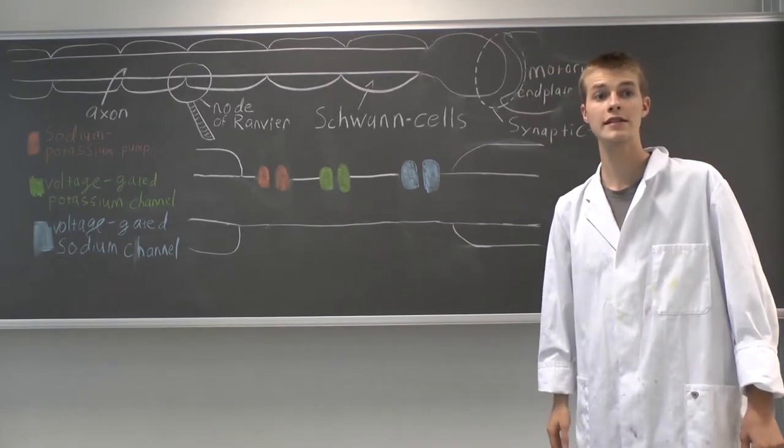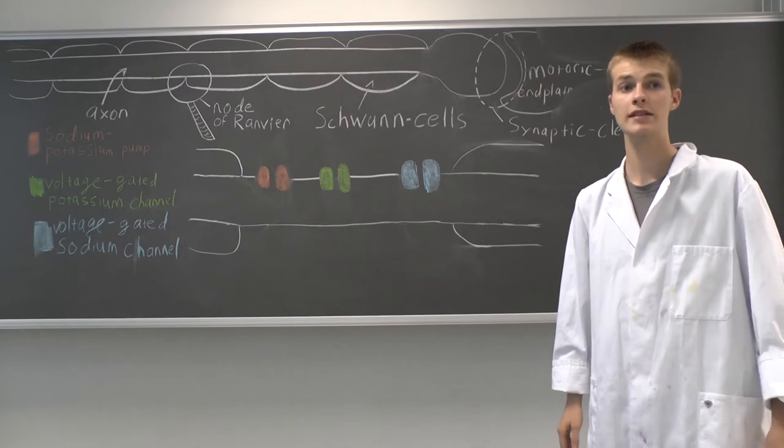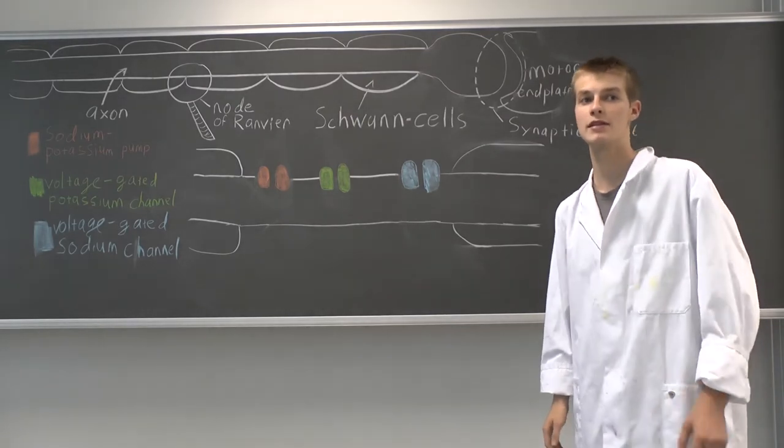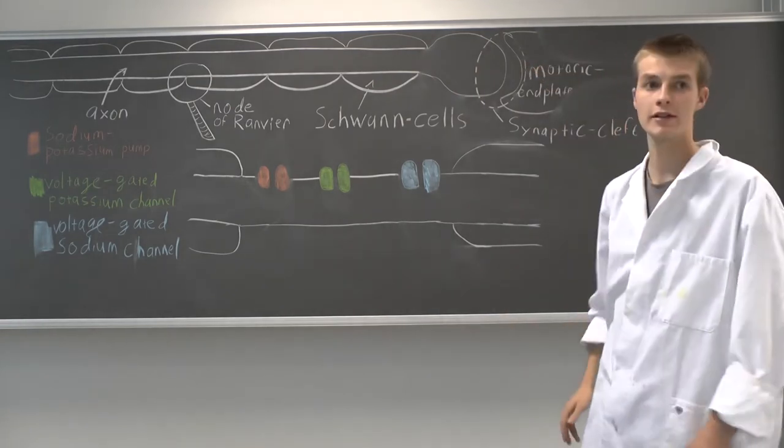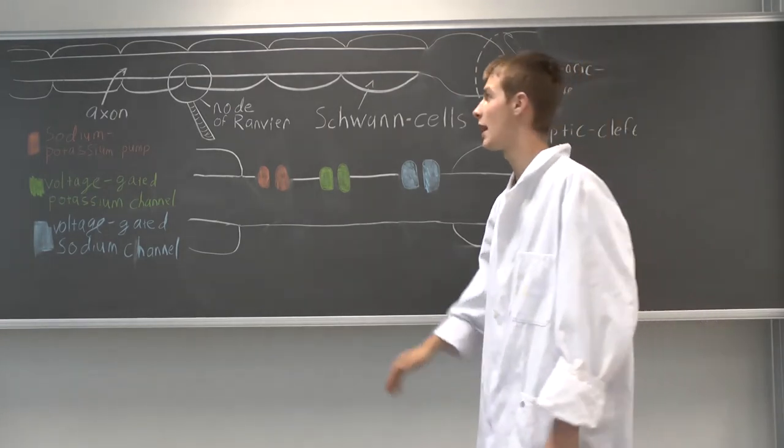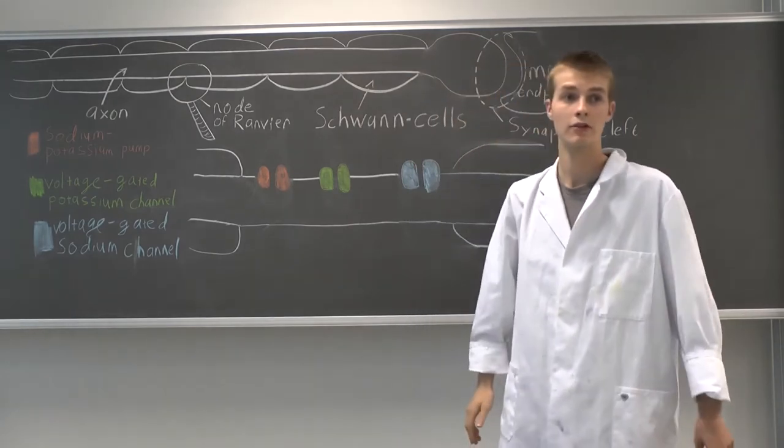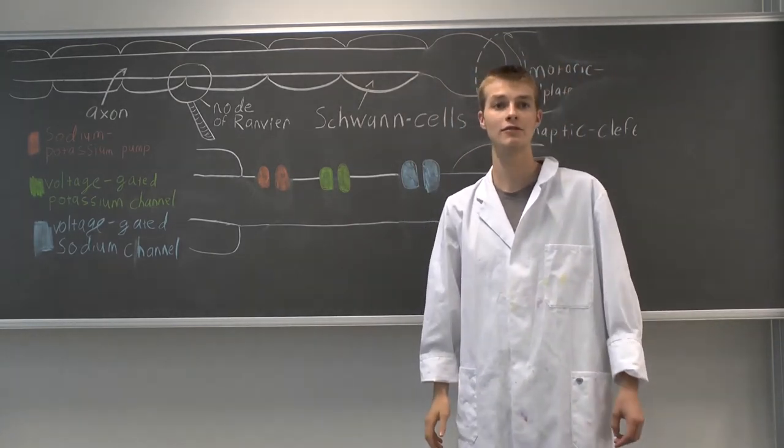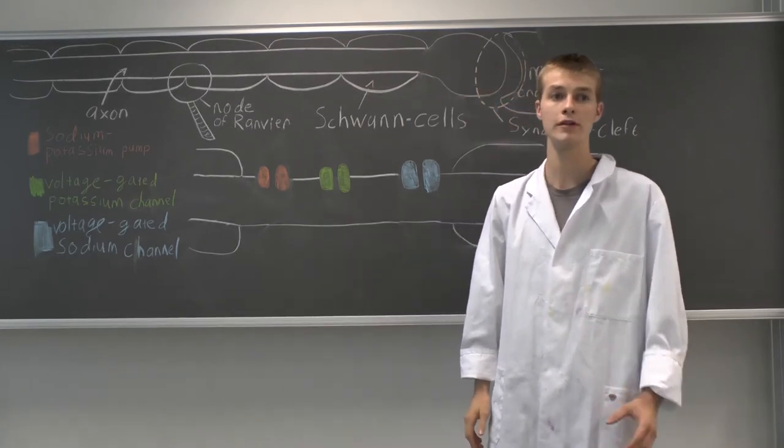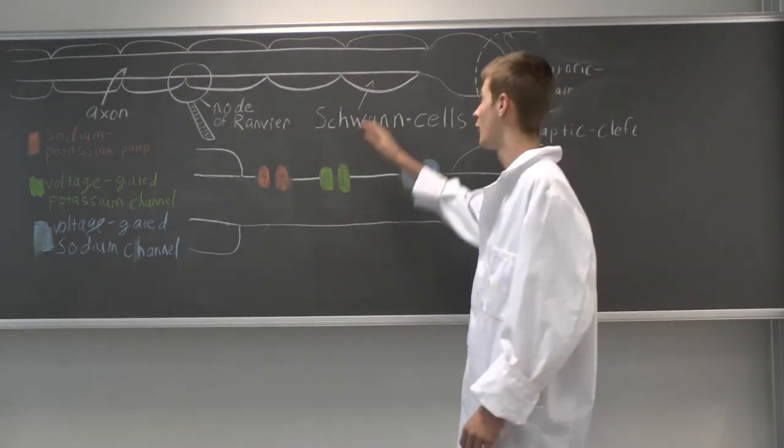Unlike most other toxins and drugs, dendrotoxin doesn't affect directly the transmission of the signal from one neuron to another over the synaptic cleft. But it acts already at the axon. To understand how and where the dendrotoxin affects the signal transmission, we have to look first at the normal functioning of an axon.